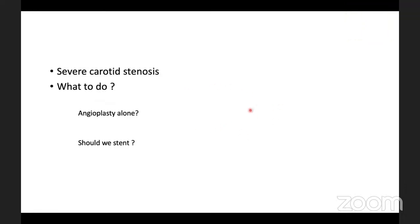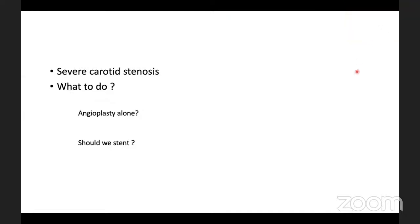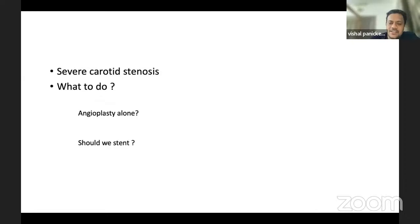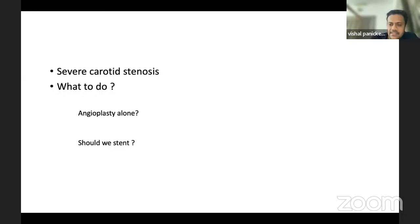A participant asks whether imaging was done at the presenting hospital. The response clarifies that a CT was done one hour before reaching the center, at the local hospital. Prior to mechanical thrombectomy, no additional imaging was taken — the patient had aphasia and right-sided weakness, and the image showed no bleed, so they immediately took him for mechanical thrombectomy, deciding on it after DSA.